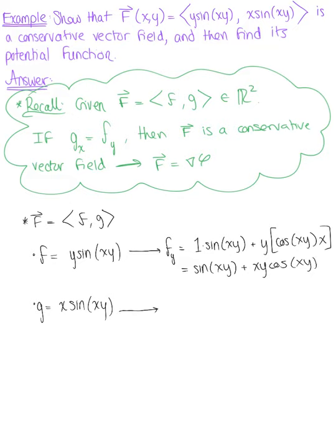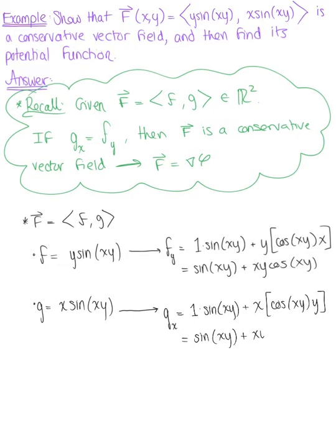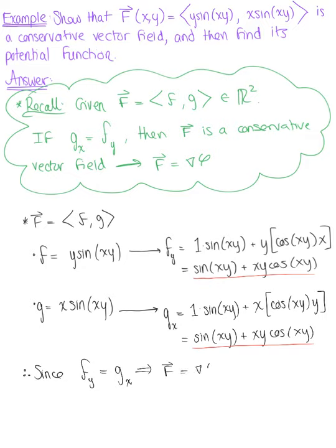Similarly, for component G we find the partial derivative of G with respect to X using the product rule: 1 times sine of XY plus X times cosine of XY times Y, since Y is constant when differentiating with respect to X. This leaves us with sine of XY plus XY cosine of XY. We see that ∂F/∂Y equals ∂G/∂X, so the vector field is conservative and we can find its corresponding potential function.